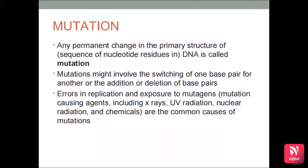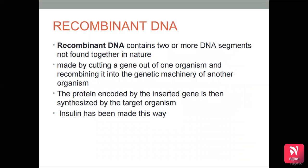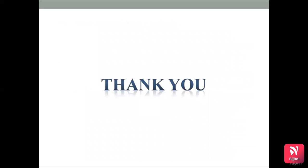Any permanent change in the primary structure or sequence of nucleotide residues in DNA is called a mutation. Mutations might involve switching one base pair for another or the addition or deletion of base pairs. Errors in replication and exposure to mutagens are common causes of mutations. Recombinant DNA contains two or more DNA segments not found together in nature; it is made by cutting a gene out of one organism and recombining it into the genetic machinery of another, so the protein encoded by the inserted gene is synthesized by the target organism. Insulin has been made this way.